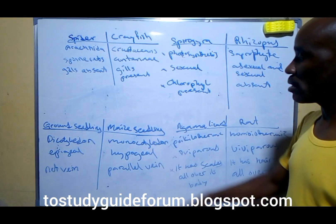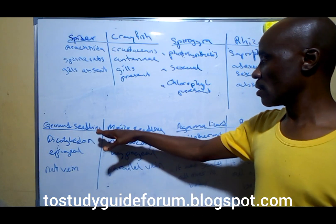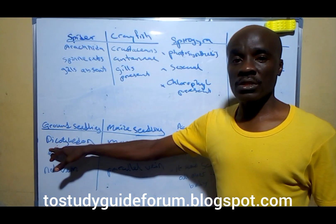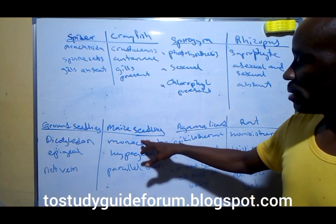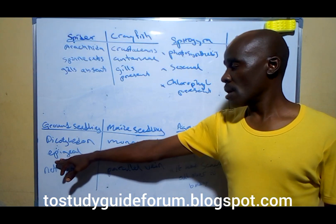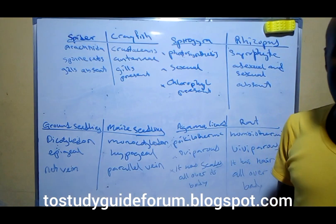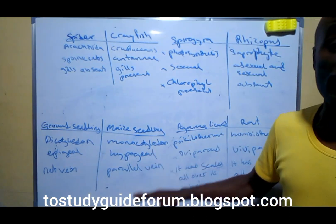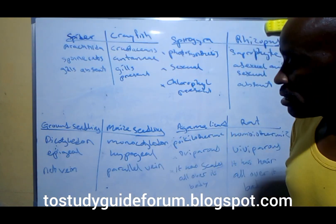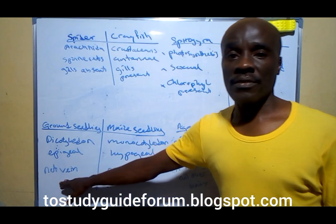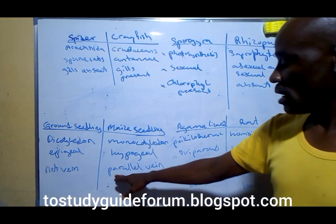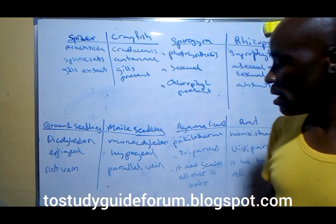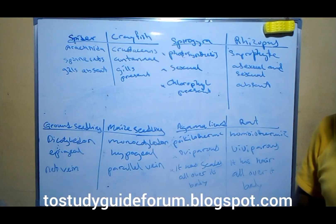We will come over to the groundnut seedling and maize seedling. The groundnut seedling is a dicotyledon, while the maize is a monocotyledon. The type of germination in the groundnut is what we call epigeal, while that of the maize is called hypogeal. For the groundnut they have net venation for their leaves, and the maize has parallel veins.